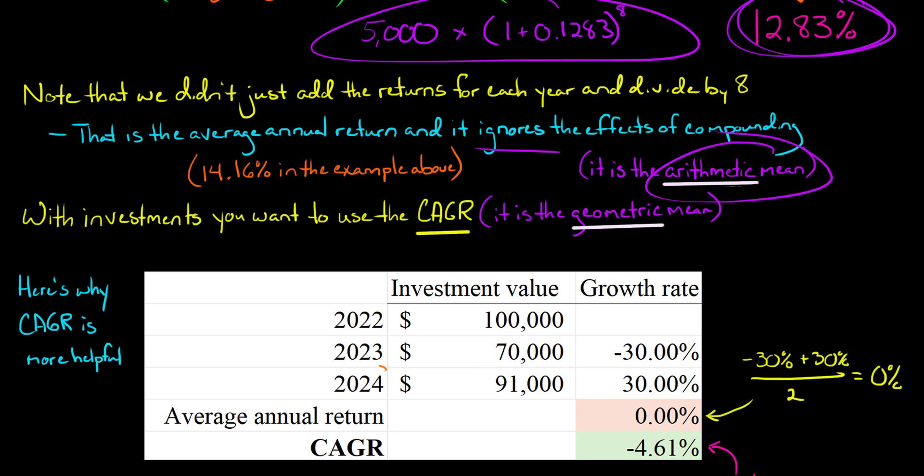Now, in 2024, your fortunes turn around. You have a 30% increase in your investment. Now, if you just took the average annual return, you say, well, I had a negative 30% return the first year, positive 30% return the second year. So just add those up. That adds up to zero. They cancel out. Divide that by two. You take zero, divide it by anything, you're going to get zero. So you basically say, my average return was zero.